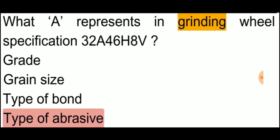What A represents in grinding wheel specification 3, 2, A, 4, 6, H, V. So A represents type of abrasive.